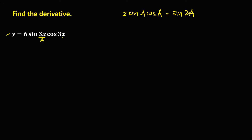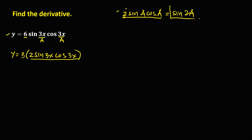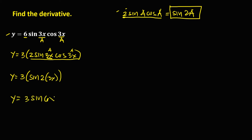On this given, 3x is a. Since the identity requires a 2, we rewrite 6 as 3 times 2. So y equals 3 times 2 sine 3x cosine 3x, which equals 3 times sine 2a. Since a equals 3x, y equals 3 sine 6x. We can now find the derivative using this equation.